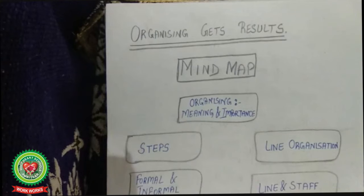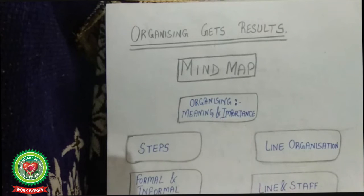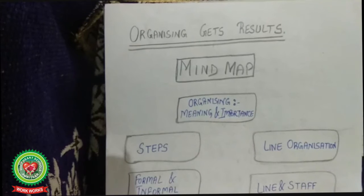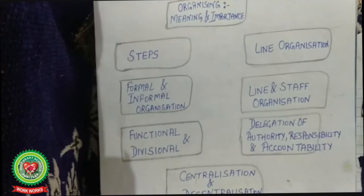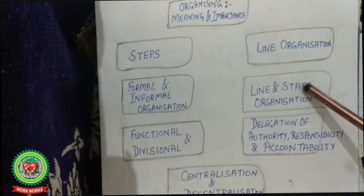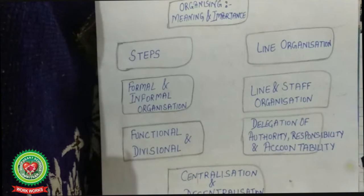Organizing helps in getting results. While making a mind map of the chapter, we have so far covered organizing — its meaning and importance, the organizing process, line organization. We will also cover line and staff organization, divisional structure, functional organization, centralization, decentralization, and delegation — all in this week.